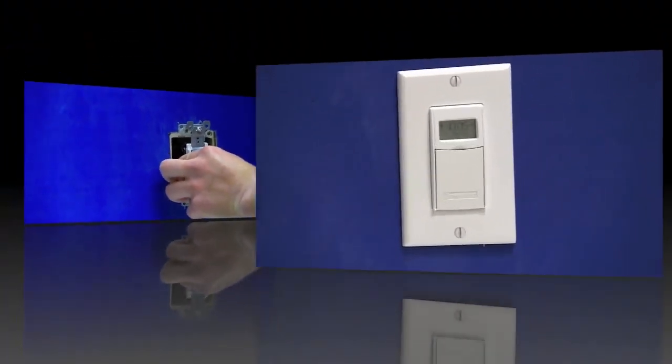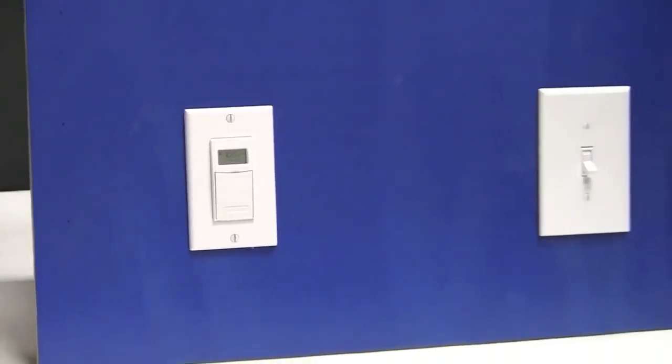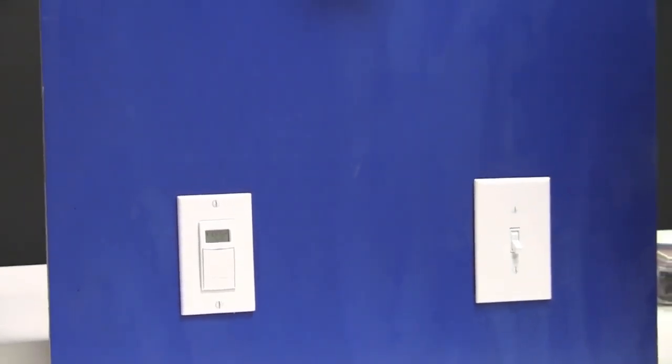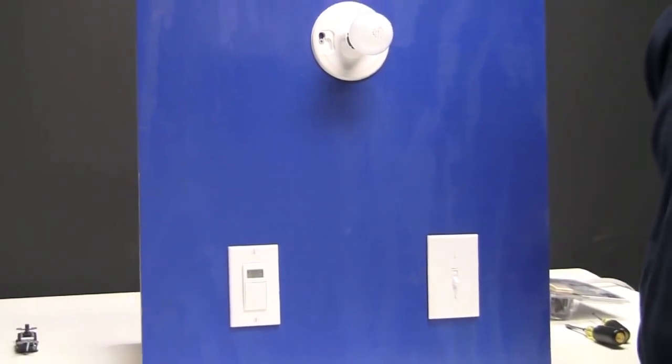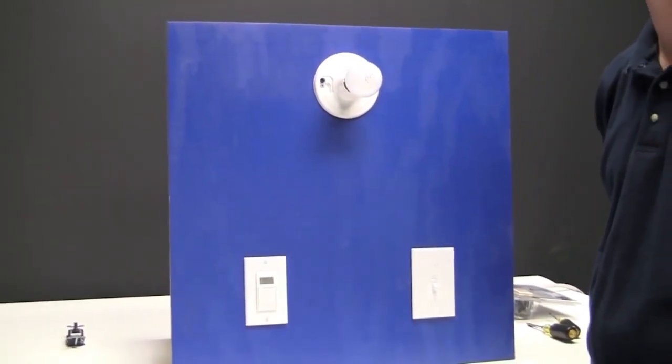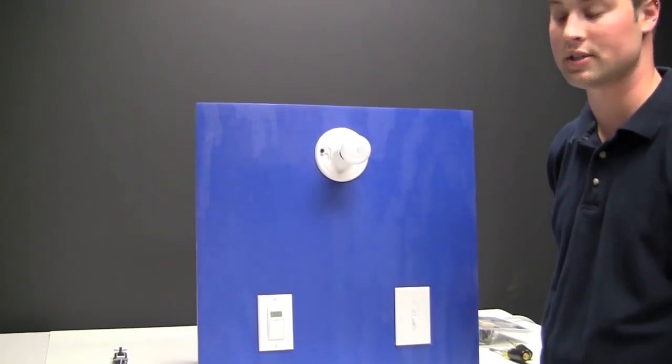Now that you have both of the wall plates secured to the wall covering the switches it's safe to turn the power back on so we can test the timer and the three-way switch. You'll want to make sure that you can turn it on and off from both locations.